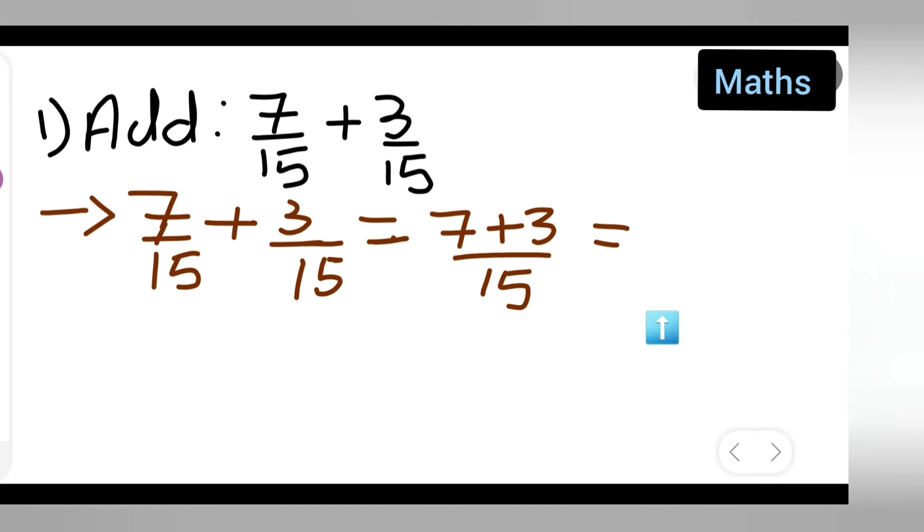Now this equals 10/15. 5 twos are 10, 5 threes are 15, so this will cancel. What I've done: 5 threes are 15, 5 twos are 10, so 2/3 is your answer.